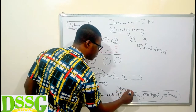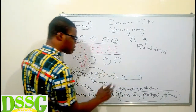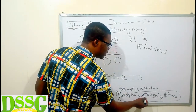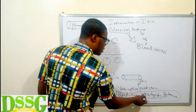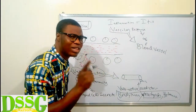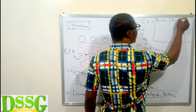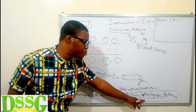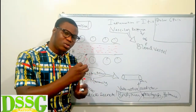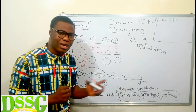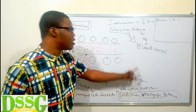Due to the secretion of prostaglandin, the person will start feeling one of the cardinal signs of inflammation — which is dolor, pain. So pain occurs due to the secretion of prostaglandin by the damaged cells. To recap: after tissue damage, vasoconstriction occurs to prevent blood loss, and then the damaged cells secrete bradykinin, prostaglandin, and histamine, with prostaglandin leading to sensitization of pain.